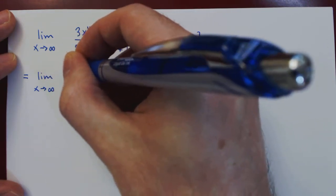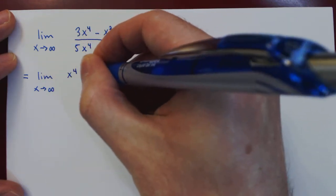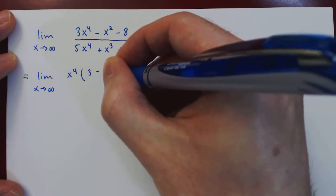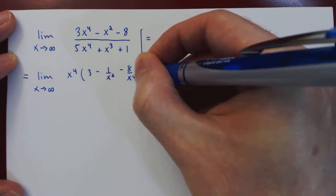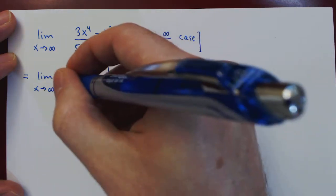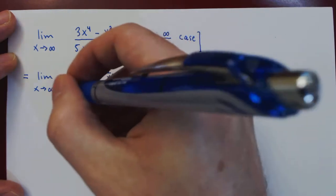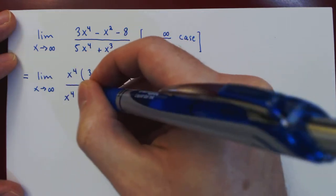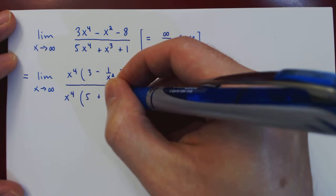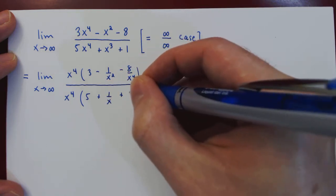So we have on the numerator x^4, then times 3 minus 1 over x squared minus 8 over x^4, then divided by, we are also factoring x^4, and what's left over is 5 plus 1 over x plus 1 over x^4.